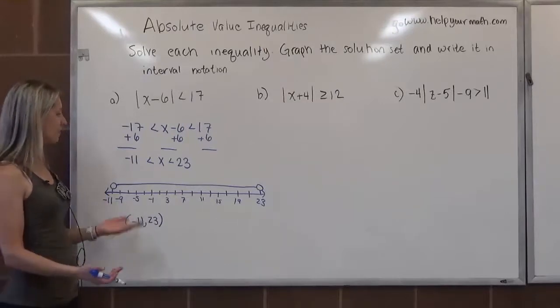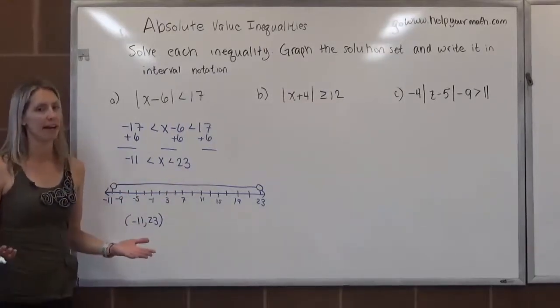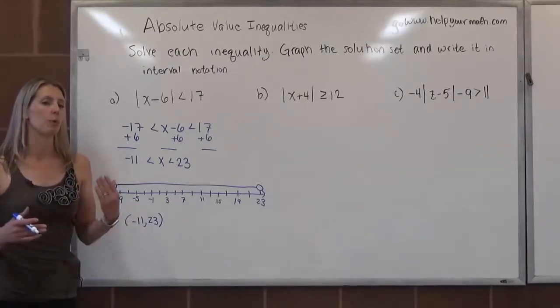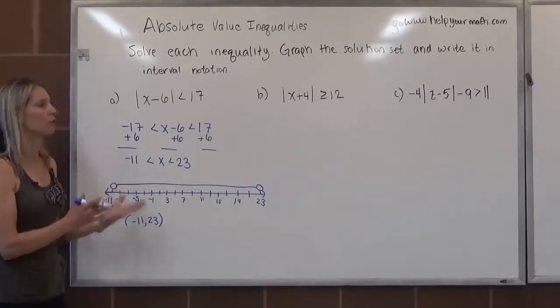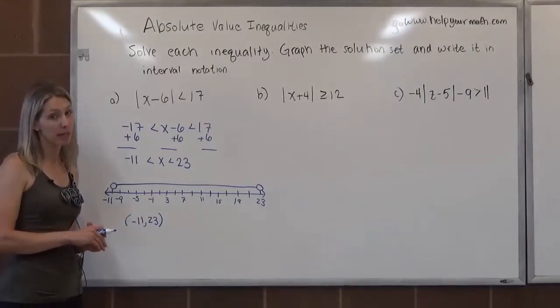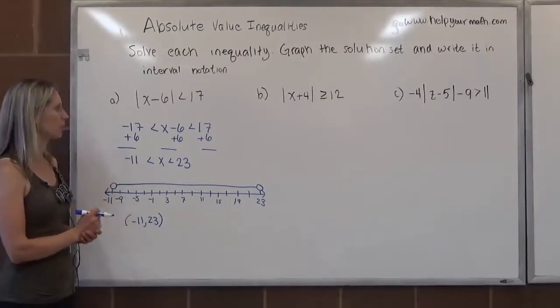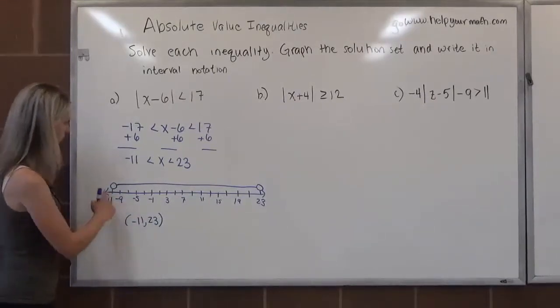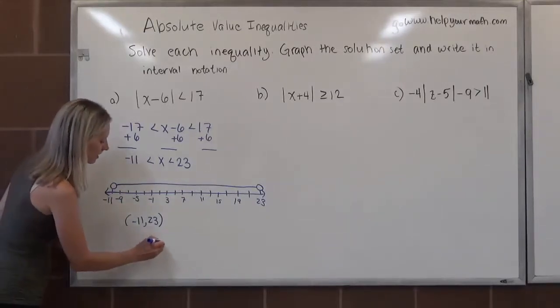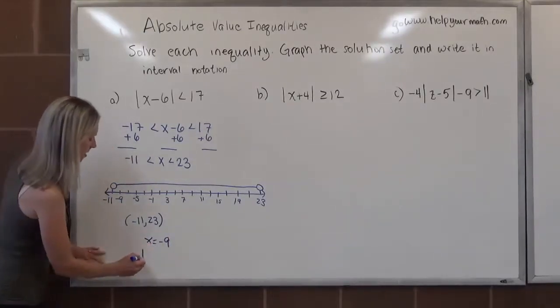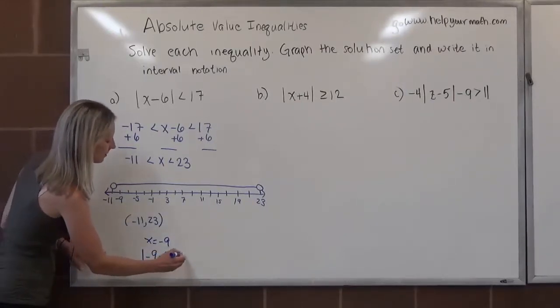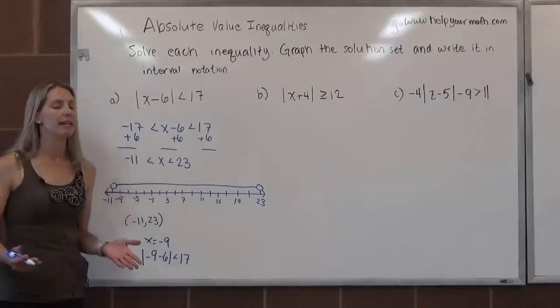If you want to, you can test one of these numbers just to make sure that you end up with a correct inequality. It won't verify that your answer is 100% accurate, but you at least know you're on the right track. That's called using a test point just to verify your solution. So let's say, what's one number that's a solution? How about negative 9? So let's plug in x equals negative 9. That would be the absolute value of negative 9 minus 6 is less than 17.